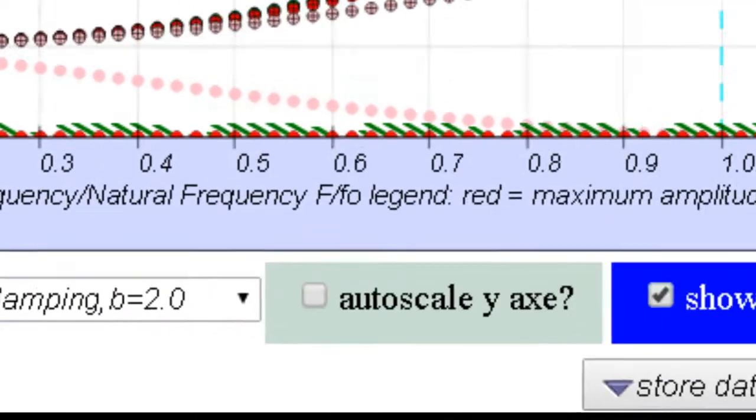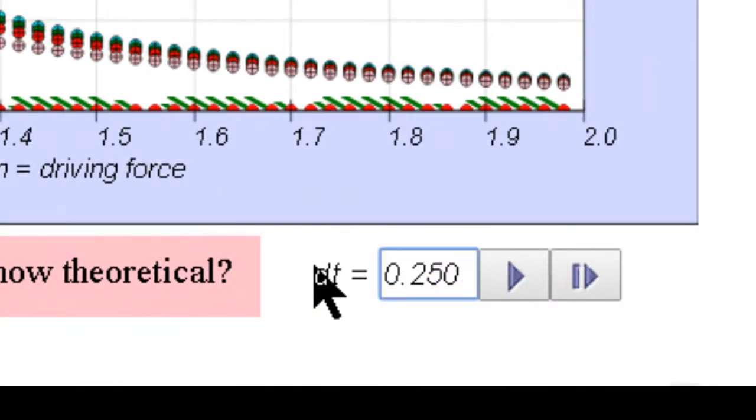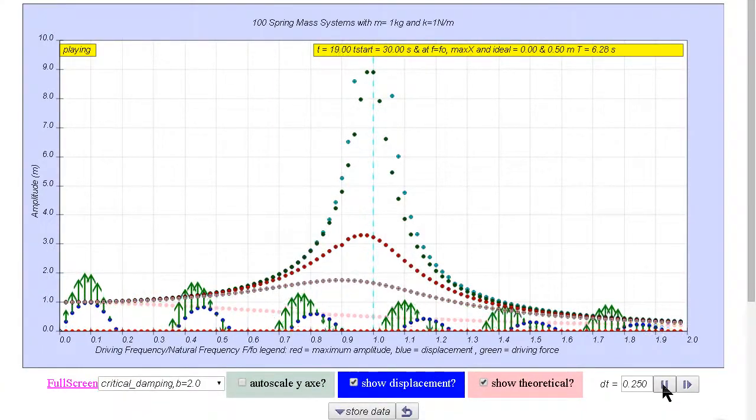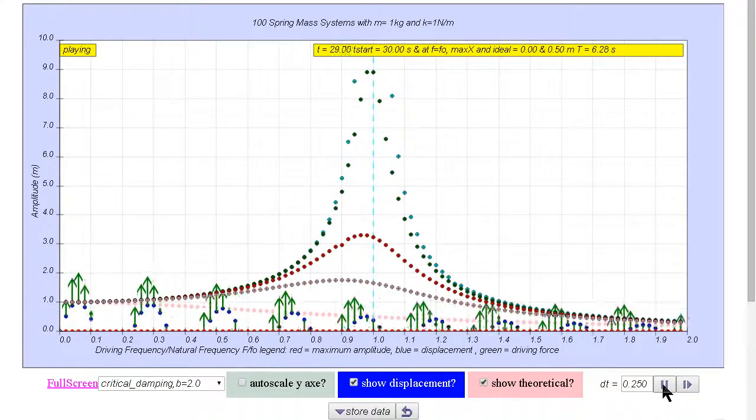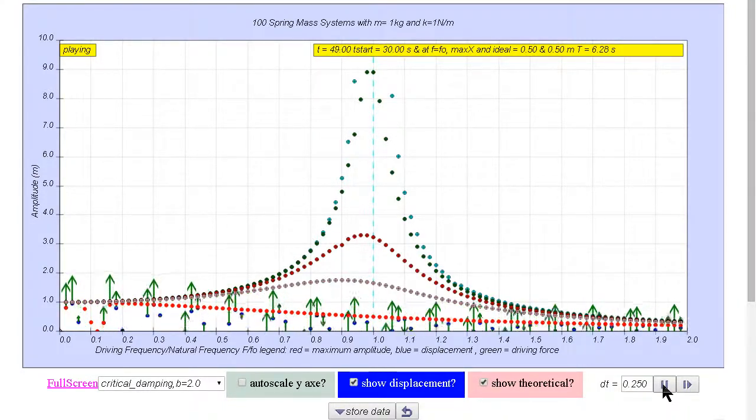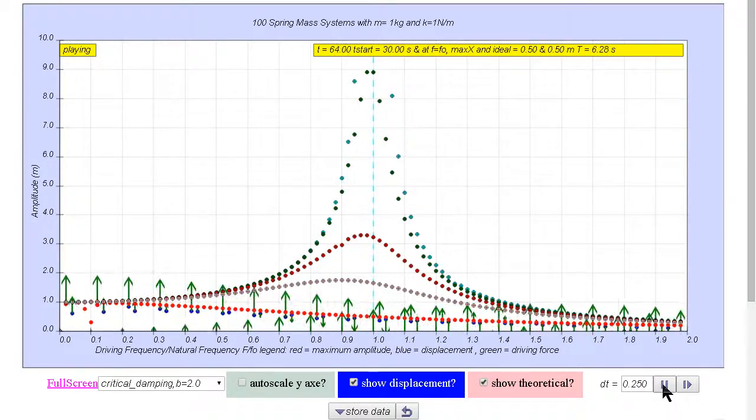Let's change the delta T to 0.25, and you can see that now the simulation runs a little bit more smoother and slowly to allow you to see. And we can now see that the red dots, which is the maximum amplitude, is being pushed by the instantaneous displacement of the masses, and eventually it does saturate to the steady state.